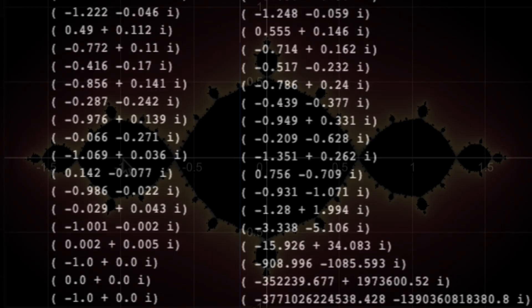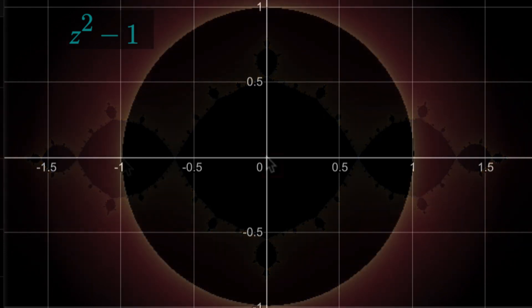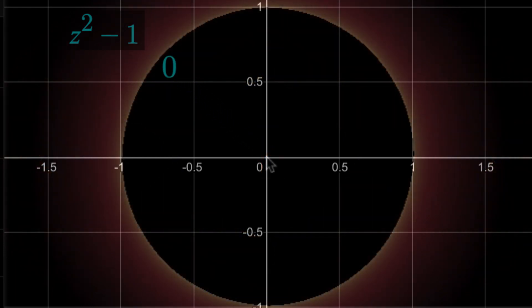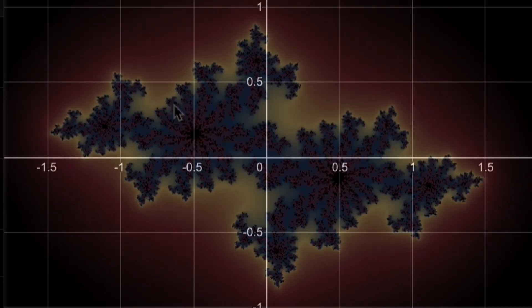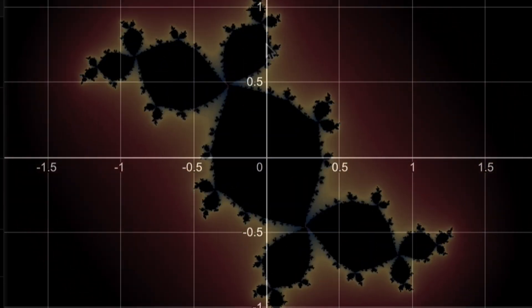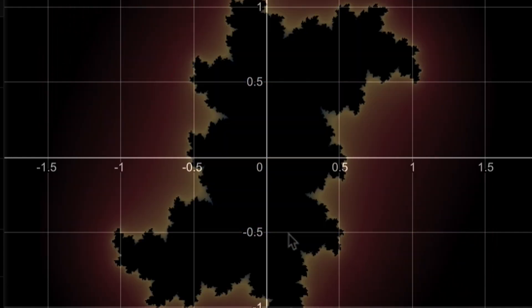I also found an online Julia set generator, which will show the set for z squared plus any complex value based on where your mouse is. Right now it's at negative 1, so this is the set for z squared minus 1, which we knew. And now my mouse is at the origin, which shows that the Julia set for z squared is the unit circle, which we also saw earlier. As I move the mouse around though and we change that complex constant, we can see how the associated Julia set changes.